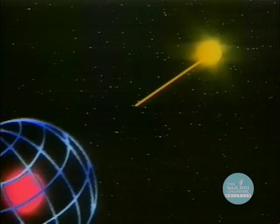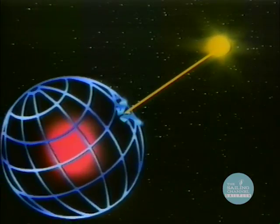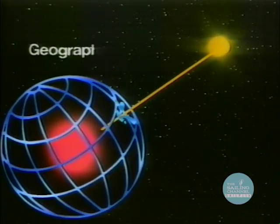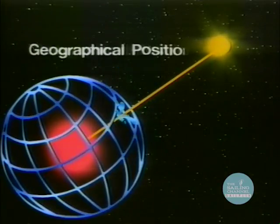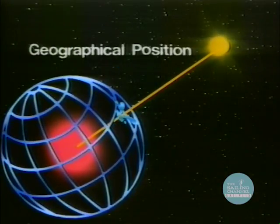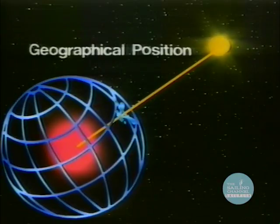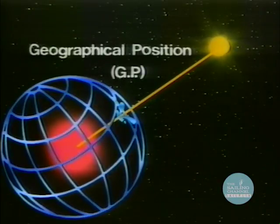You should understand what the geographical position, or GP as it is called, actually is. If you were to draw a line from any celestial body — the sun, stars, etc. — to the center of the Earth, the point at which that line passes through the surface of the Earth is that body's GP.